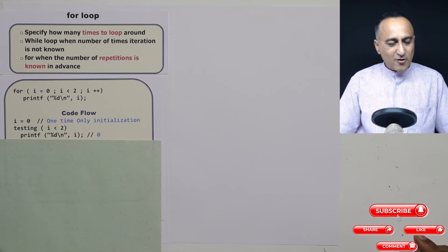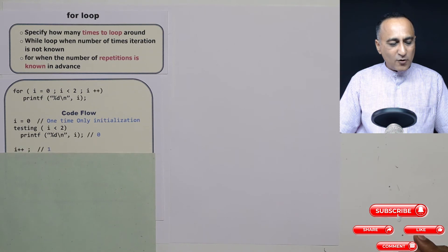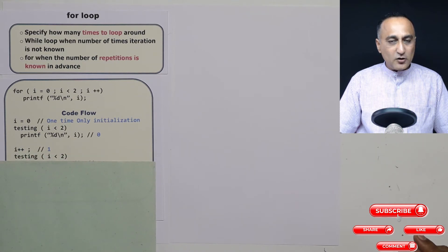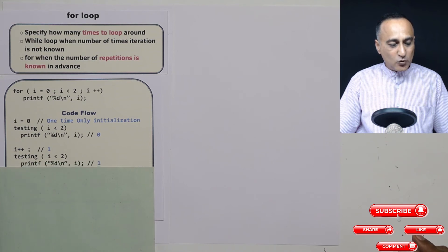Then after it prints the value of i, it will go and increase the value of i by one. i plus plus now i becomes one. Once i becomes one, it will again test is i less than two. Since one is less than two, it will print the value of i which happens to be one.